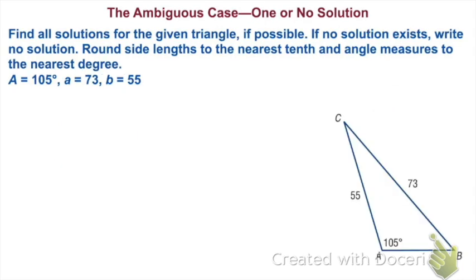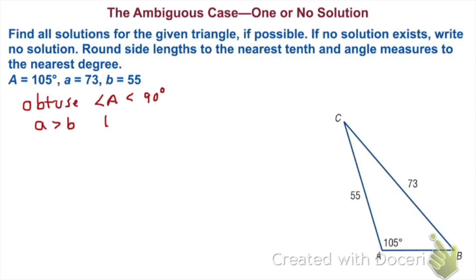Here we have the ambiguous case where we could have either one or no solution. We want to find all solutions, rounding side lengths to the nearest tenth and angle measures to the nearest degree. Angle A is 105 degrees, side A is 73, and side B is 55. Since angle A is greater than 90 degrees, we have an obtuse triangle. Also, A is greater than B — 73 is greater than 55 — which means we will have one solution.